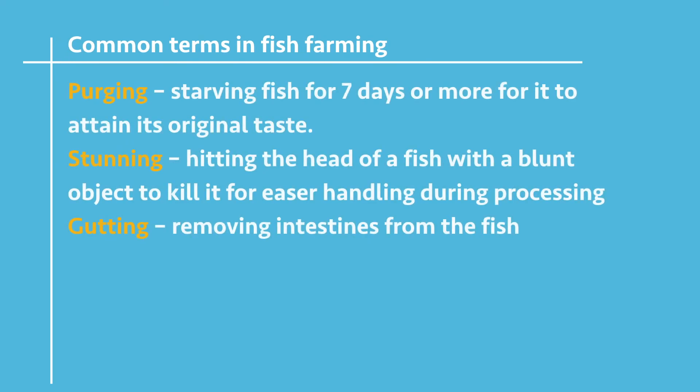Broodstock refers to the selected mature female and male fish for reproduction. Purging is the process of enhancing the taste of fish by starving it for a given period of time. Stunning is the process of hitting the head of the fish with a blunt object to make it easier to handle during processing. Gutting is the process of removing the intestines from the fish.